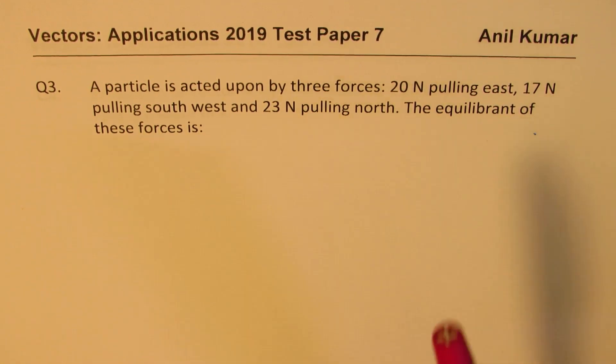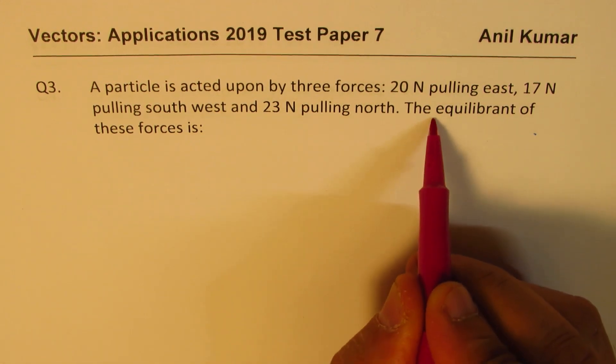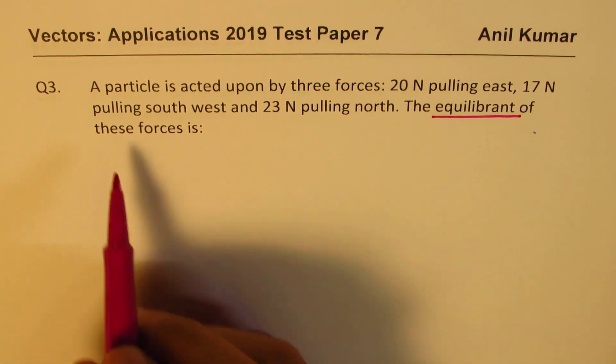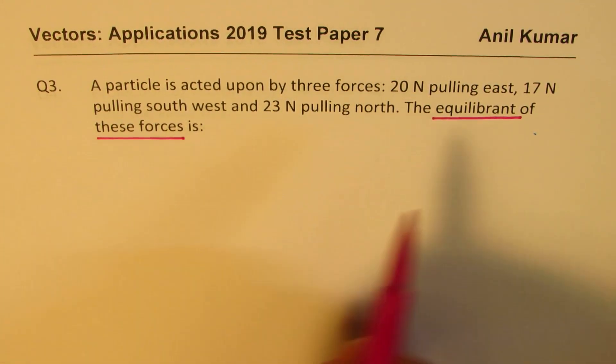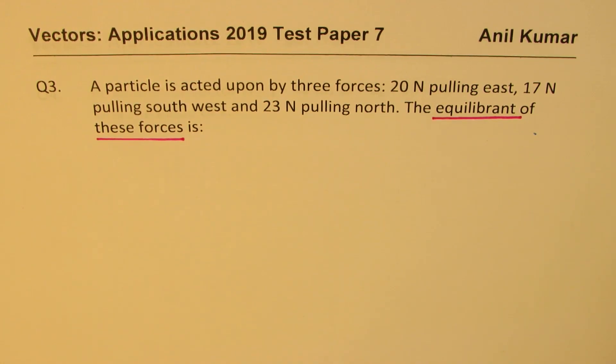Now what is the meaning of equilibrant? That means a force which acts in the reverse direction to make it stable. So that is kind of important to understand. We don't want the resultant force.